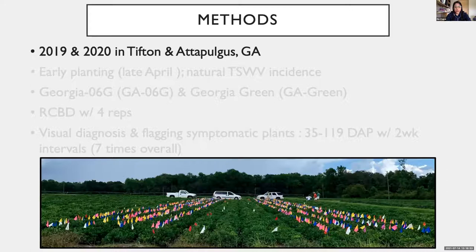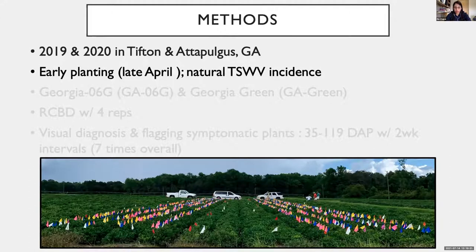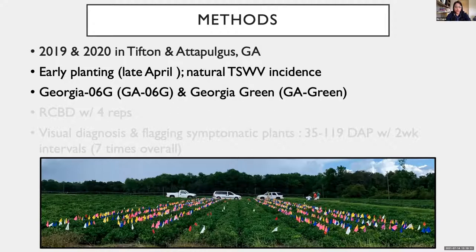The experiment was conducted in 2019 and 2020 at UGA Research Farms in Georgia. We planted peanut in the early planting window to increase the possibility of high TSWV pressure, as we relied on the natural occurrence of TSWV incidence. Two runner-type cultivars, Georgia 06G and Georgia Green, were used, and the experiment was a randomized complete block design with four replications.